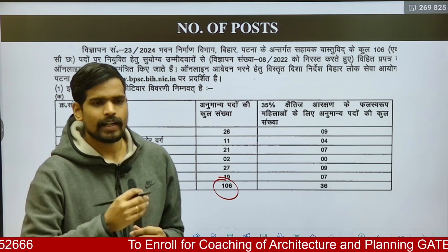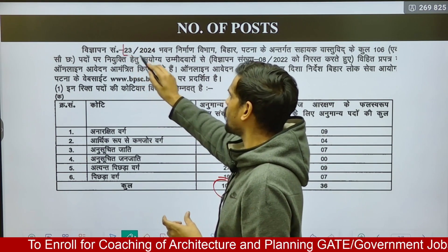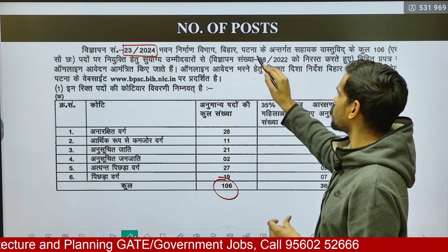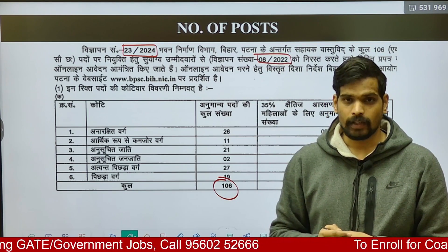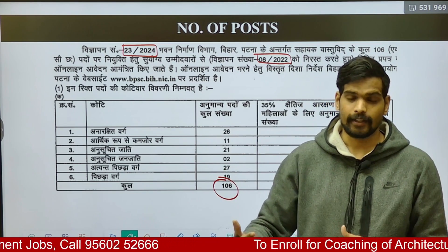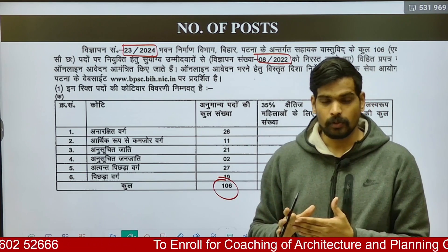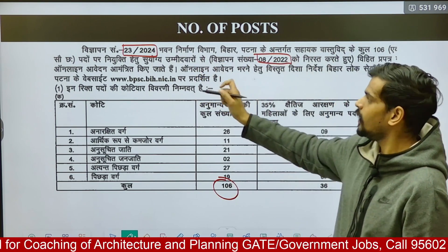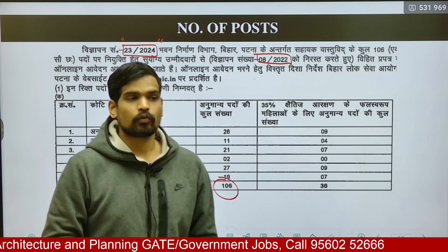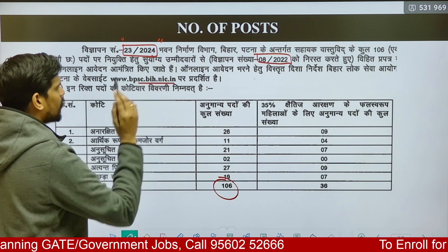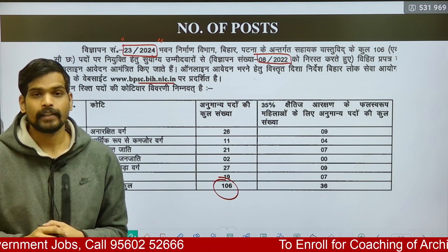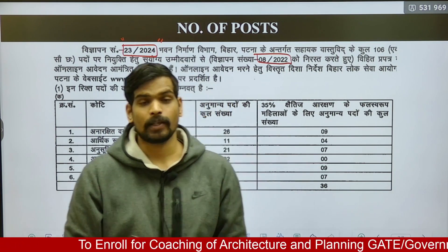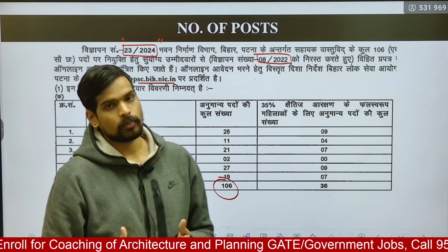One important point: this advertisement — notification number 23 of 2024 — has been released against the cancellation of the 8th notification of 2022. There was an earlier notification in 2022 for the recruitment of 106 posts of Assistant Architect. This new notification replaces that one, so anyone who had applied earlier must apply again. The official website is BPSC.BIH.NIC.IN, where you'll find the notification, syllabus, and can apply online.